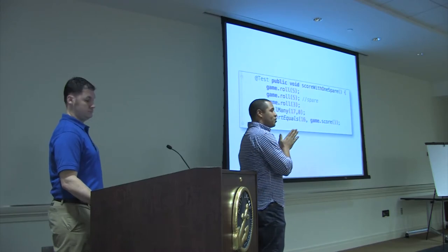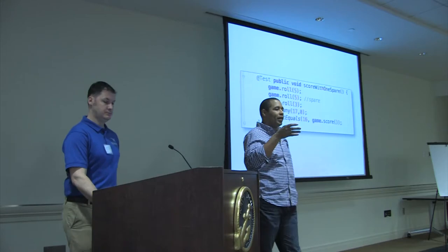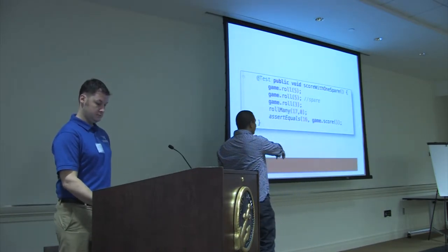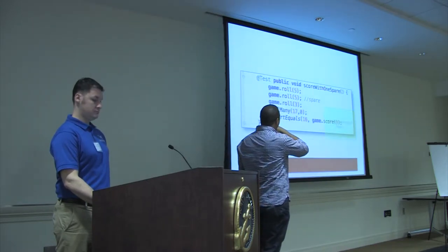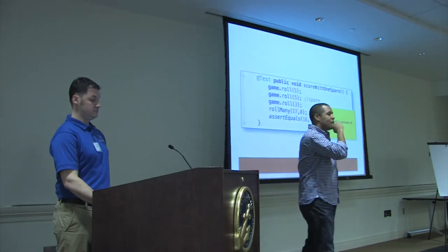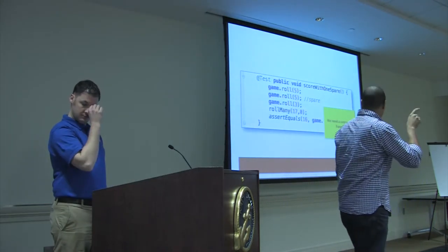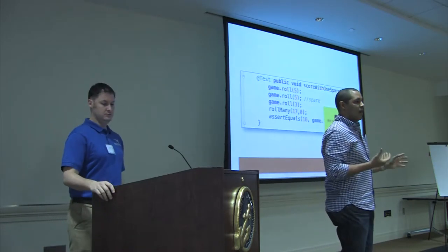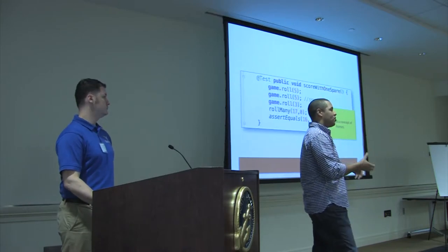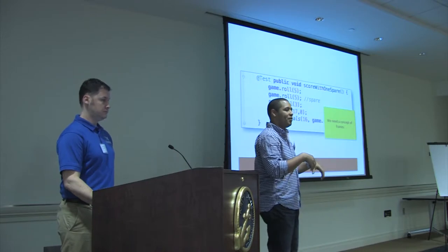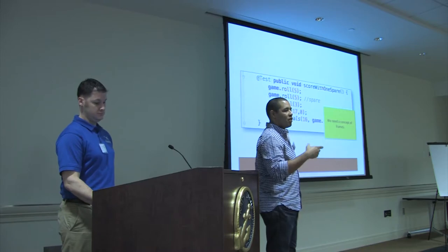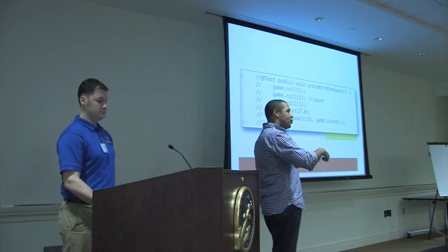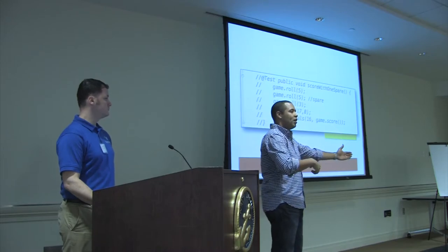Now I'm ready for the spare logic. We uncomment the spare test. Our design doesn't currently understand the concept of frames, but in order to calculate a spare you need frames. I'm going to update the score method to start counting frames — introducing 10 frames in a for loop. It'll calculate score by adding the first and second roll per frame and increment the counter by two. That passes the previous tests, but you can see quickly that if you roll a strike, this will fail — we haven't added that logic yet, so we're okay for now. We've now introduced the concept of frames.